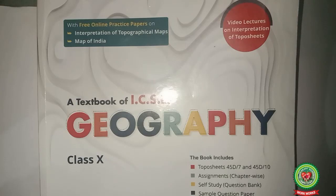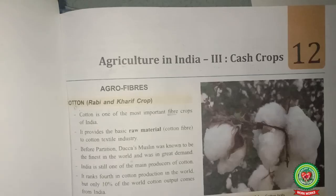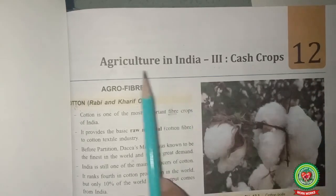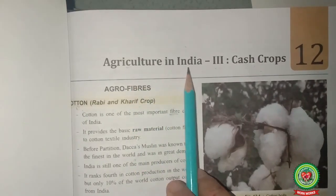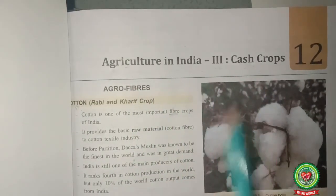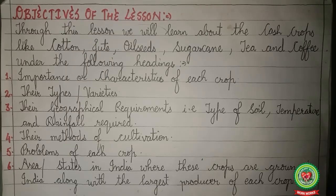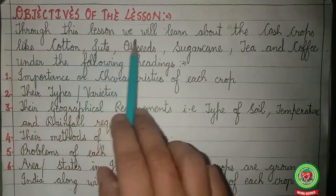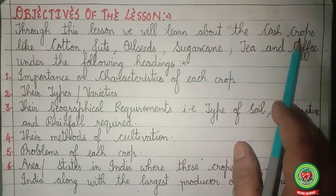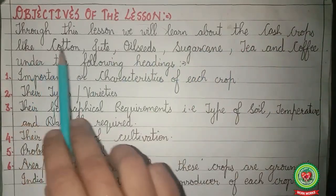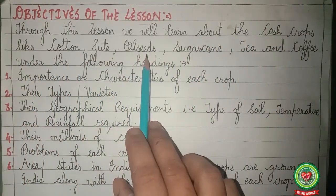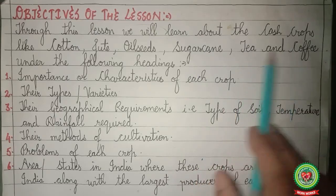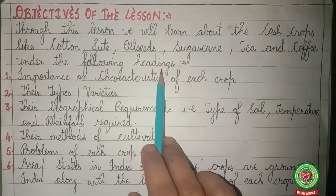Welcome to the geography class. The lesson today is lesson number 12, Agriculture in India, Part 3: Cash Crops. Through this lesson we will learn about cash crops like cotton, jute, oil seeds, sugarcane, tea and coffee.